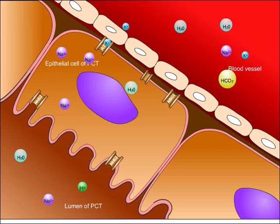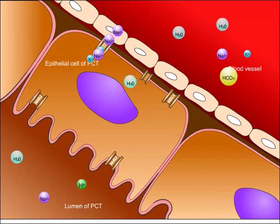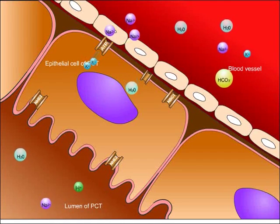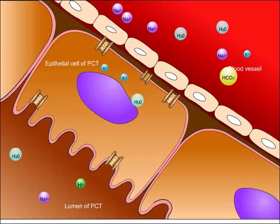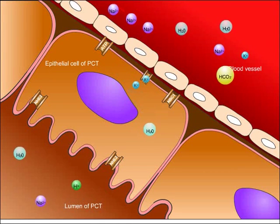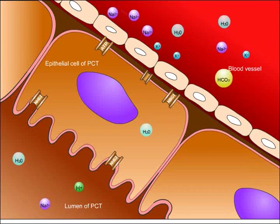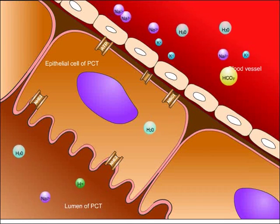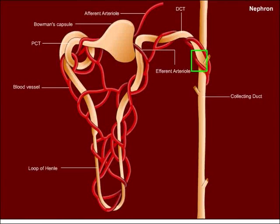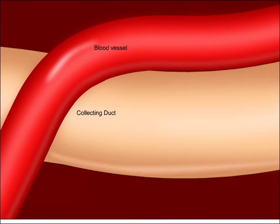Sodium also enters the blood in exchange for potassium via the sodium-potassium ATPase pump. Potassium from the cell freely diffuses through potassium channels into the blood due to a concentration gradient. Now let's proceed to the next important section of the nephron that affects ion transport: the collecting duct.